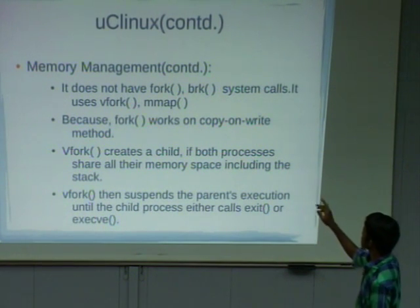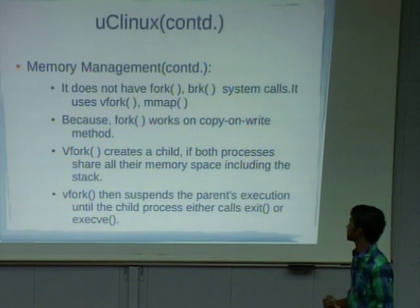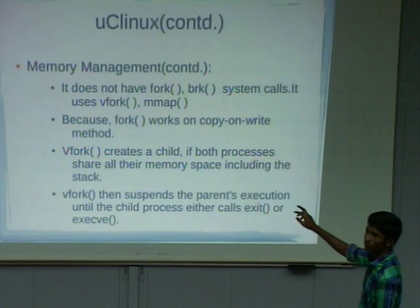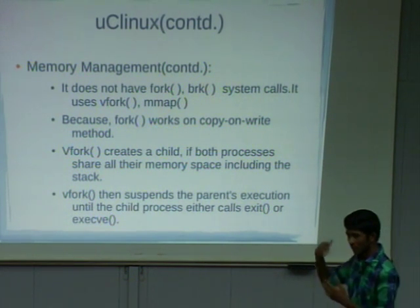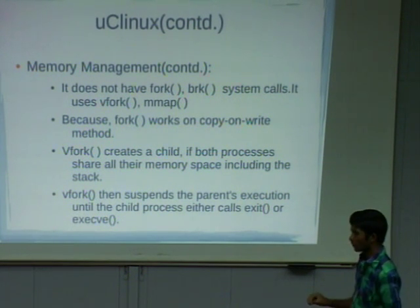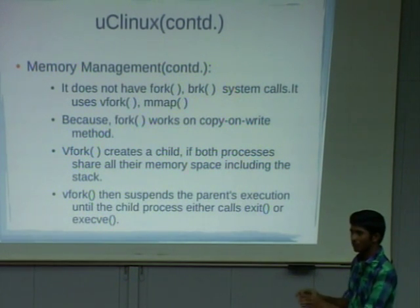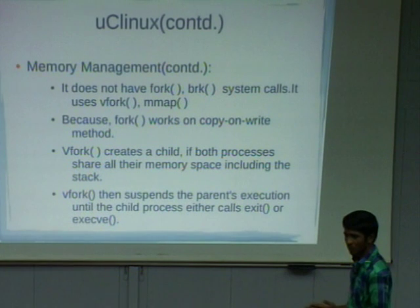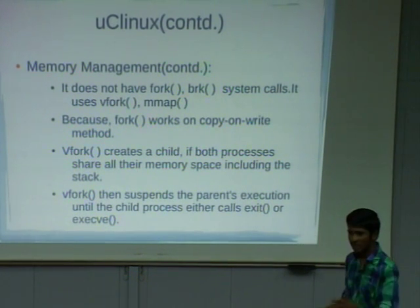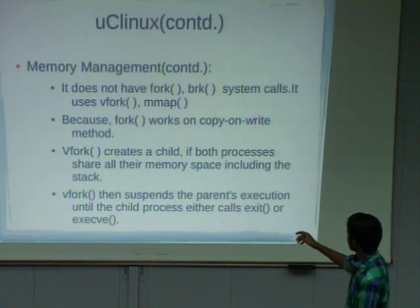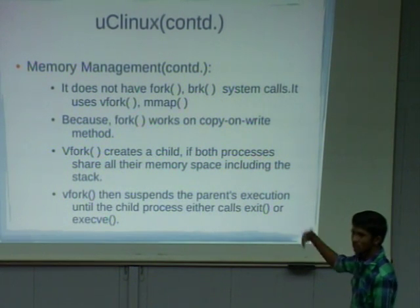There are different system calls not supported in UC Linux. Fork and BRK are two system calls not used in UC Linux. Fork works based on copy-on-write — it is mainly used to create a child process, and initially parent and children use the same address space, creating separate pages only when modification is needed. But UC Linux uses vfork instead. With vfork, whenever a child is created, the parent process is simply suspended until the completion of the child — parallel execution is not allowed. After the child finishes, the parent execution starts.